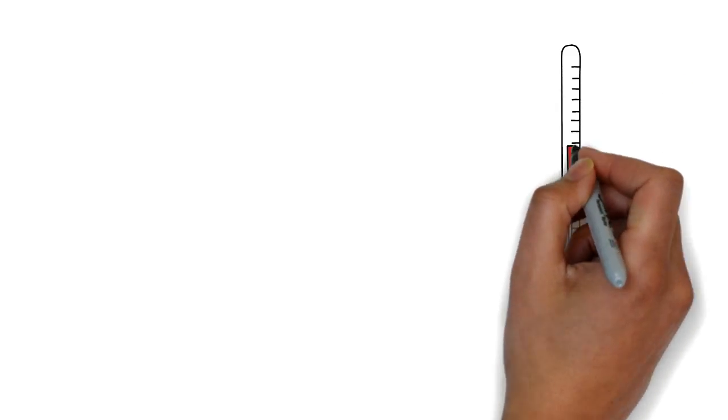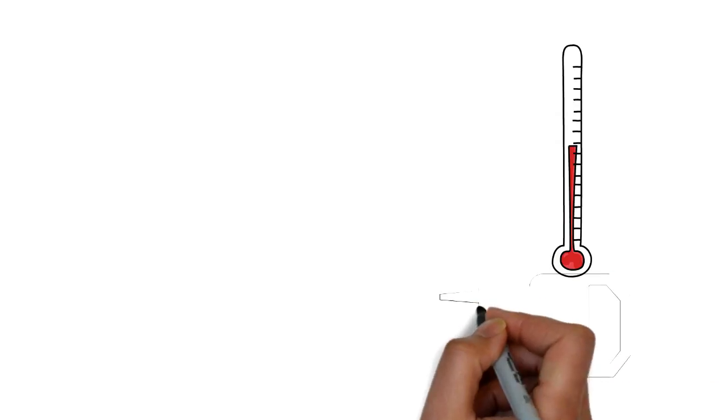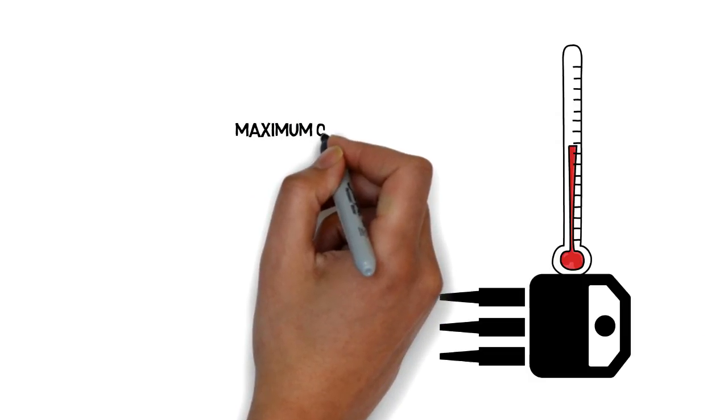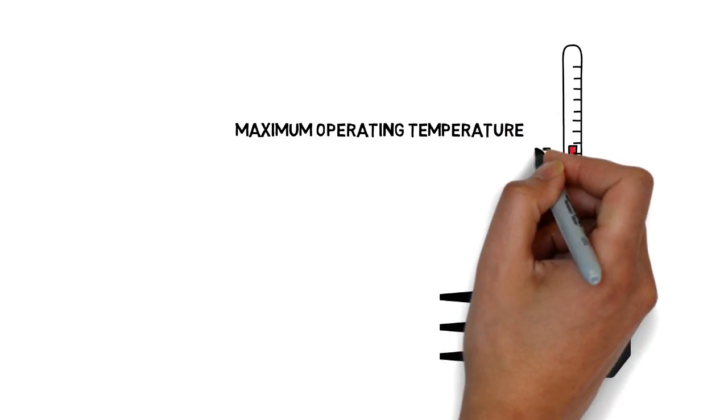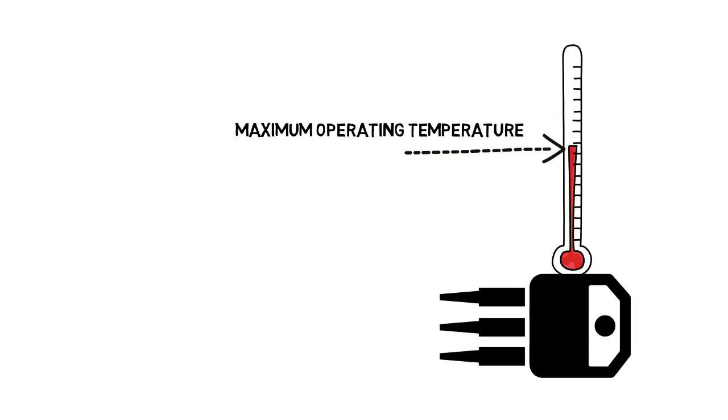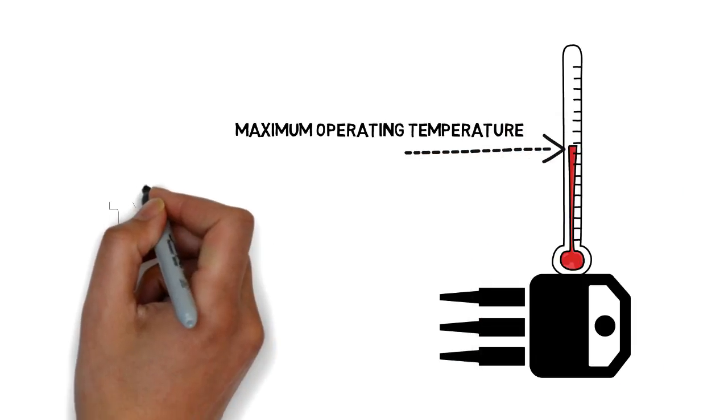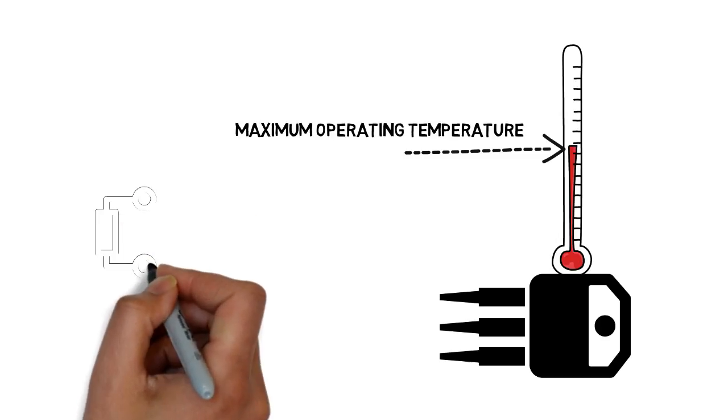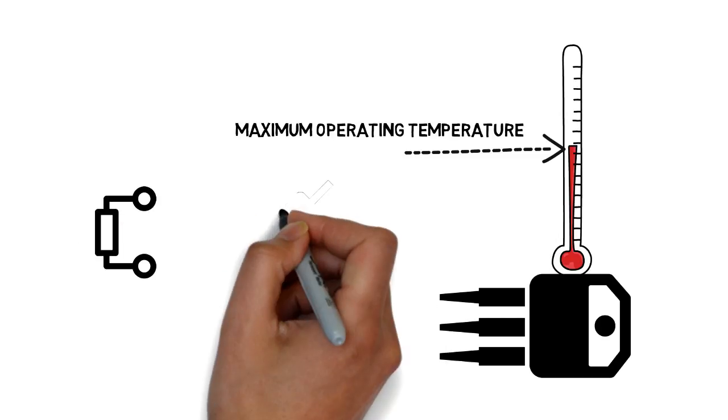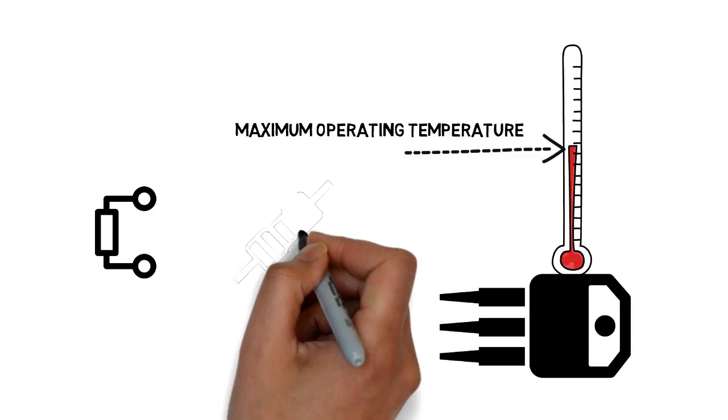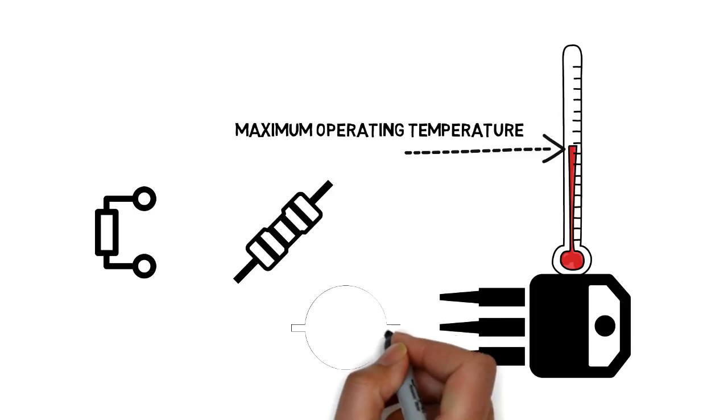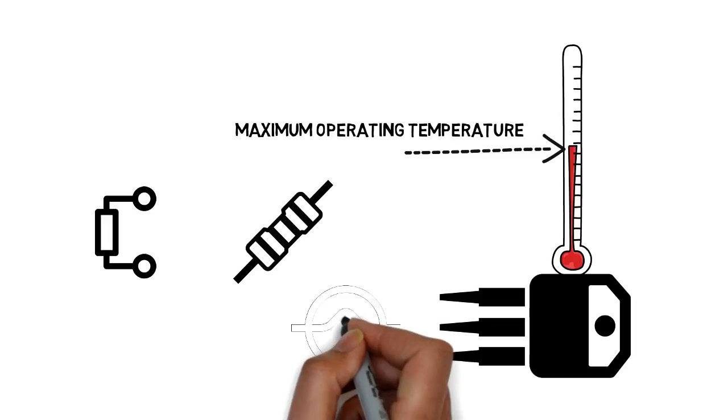The purpose of the heat sink is to maintain the temperature at a level below the specified maximum operating temperature of the electronic device it is going to cool. There are many electronic devices like transistors, processors, amplifiers, and resistors that can get very hot even if they are dissipating a single watt of power.